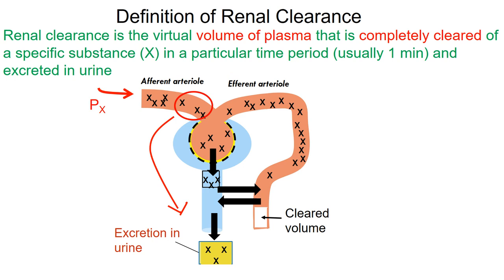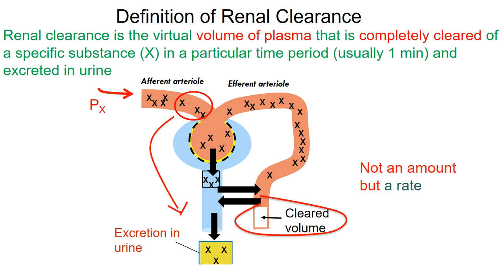When we look at the definition of renal clearance, we realize that renal clearance refers to the virtual volume of plasma that is completely cleared of a specific substance X in a particular period of time, usually one minute, and then excreted in the urine. It is important to realize that clearance refers to a volume of blood — in other words a rate — and it is not referring to an amount.